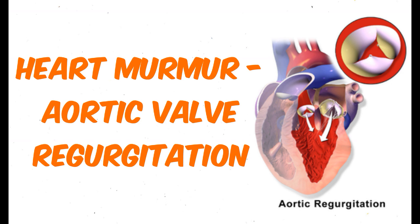Aortic regurgitation. The classic murmur of aortic regurgitation is a diastolic, decrescendo murmur, usually heard in the third or fourth left intercostal space. This murmur has a high-pitched character. Listen to a patient with typical aortic regurgitation.